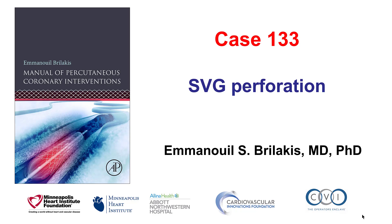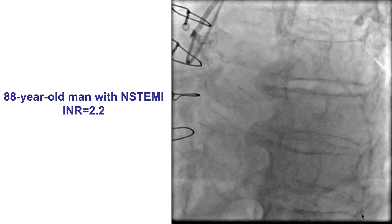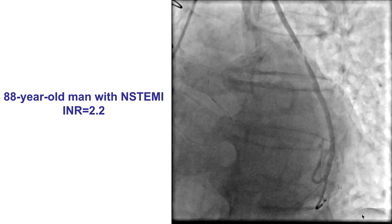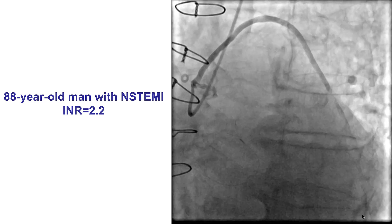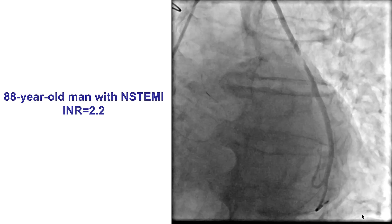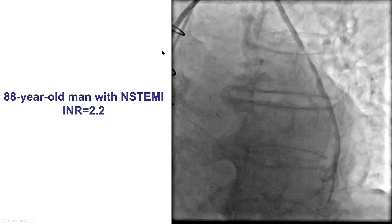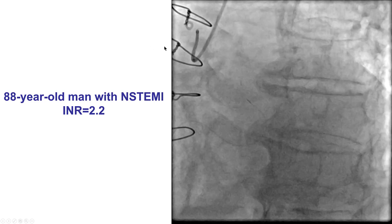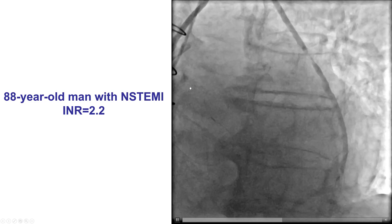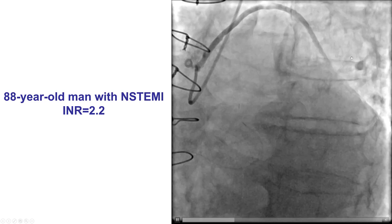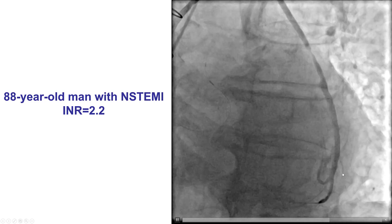Hi, this is Manos Brilakis, and this is case 133 for the Manual of Percutaneous Coronary Interventions. This is a case of saphenous vein graft perforation. The patient was an elderly gentleman that presented with non-ST elevation myocardial infarction. He was on warfarin with an INR of 2.2, so radial access was obtained to perform urgent coronary angiography. Using an AL-1 catheter — the preferred catheter for left-sided vein grafts — we found that the culprit lesion was in the saphenous vein graft to the obtuse marginal branch.